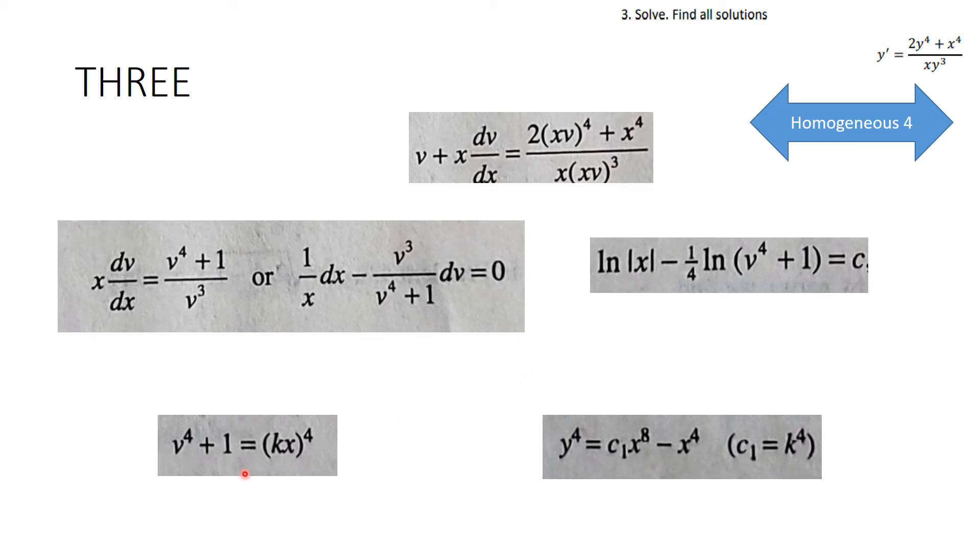So this is the solution to the separable problem, but then we have to reverse the substitution we made to make it separable. So we're going to put nu to be y over x, and we get this as our solution.